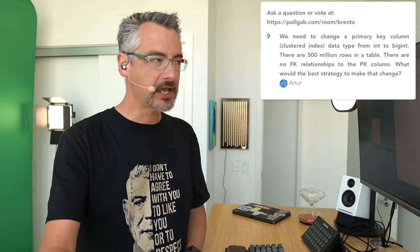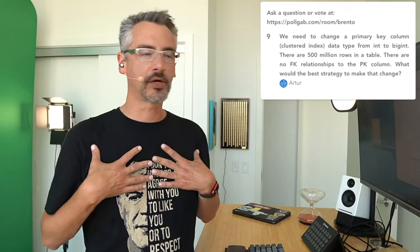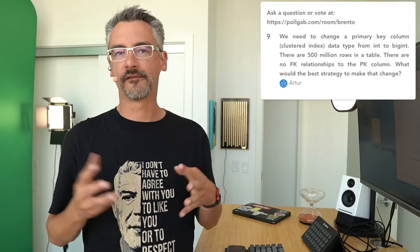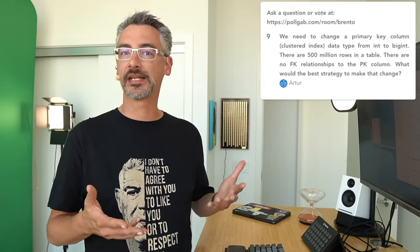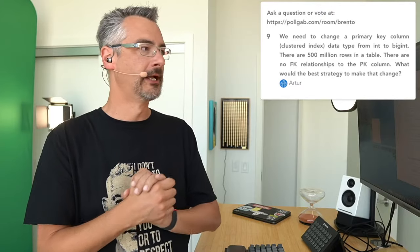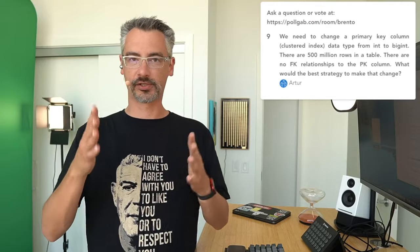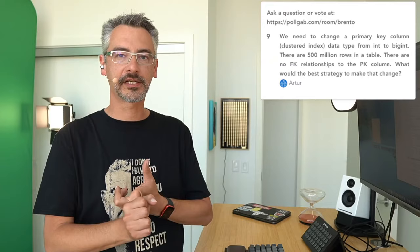Arthur asks: we need to change a primary key column from integer to bigint. There are half a billion rows in the table and no foreign key relationships. What's the best strategy? The best strategy is to search my blog. I have a blog post about changing data types from smallint to bigint. Search for 'Brent Ozar altering data types with almost no downtime' — I've got a video where I teach a technique from Gianluca Sartori, also known as Spaghetti DBA. It's a really slick trick involving compression.